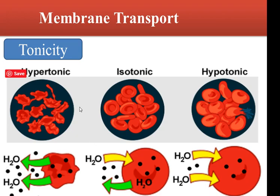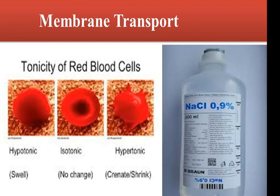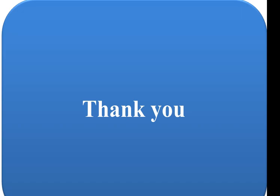To summarize tonicity: if the solution is hypertonic, water leaves the cell. If the solution is isotonic, there is equilibrium between water entering and leaving, so the cell remains normal. If the solution is hypotonic, water enters the cell, causing the cell to swell and possibly explode. I think with this we have finished our lecture today. Thank you very much.